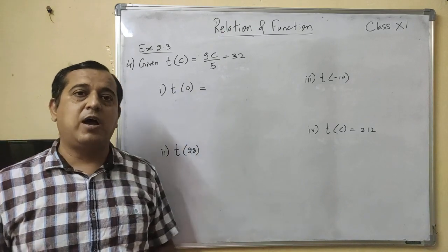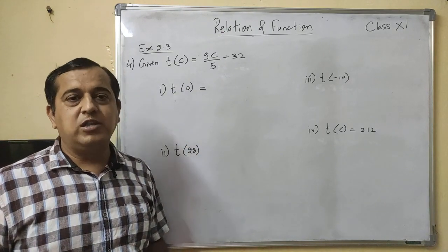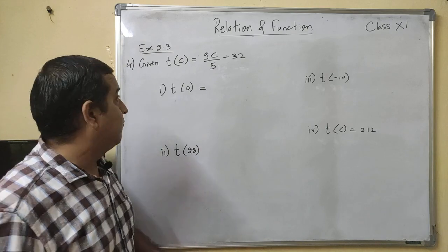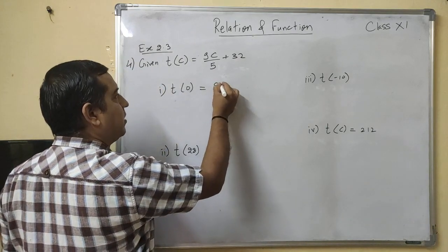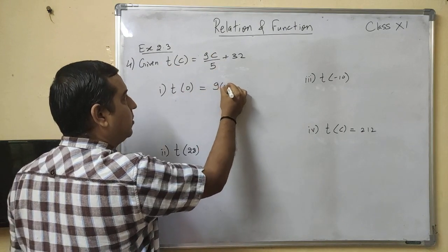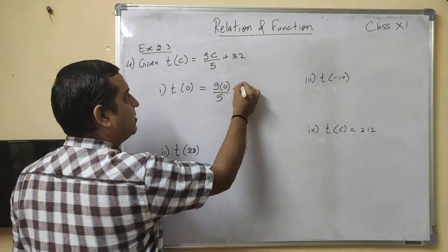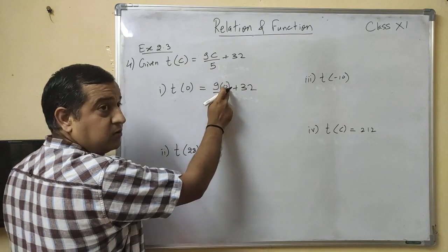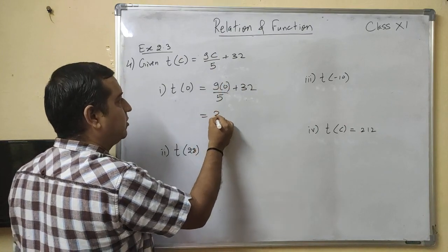Then what you have to find? You have to find T of 0, means you have to know that when degree temperature is zero, then what will be in Fahrenheit. Now for this, what will you do? The value of C given is 0. Now here put the value of C as 0.